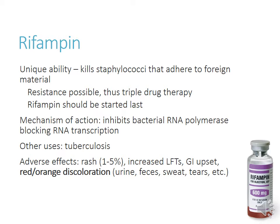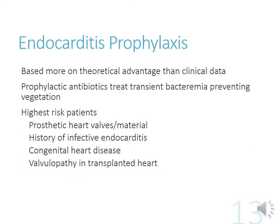Rifampin's mechanism is inhibiting bacterial RNA polymerase, blocking transcription and protein production. It's also used in tuberculosis and will come up in the pulmonary section. Key adverse effect: it causes red and orange discoloration of all excretions — urine, sweat, feces — so patients must be warned beforehand. Rifampin is also a major inducer of many CYP enzymes, especially CYP3A4, which can drive down levels of many other medications metabolized by that pathway.